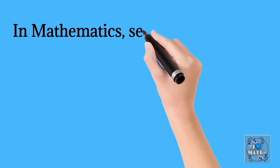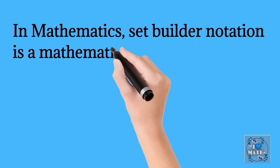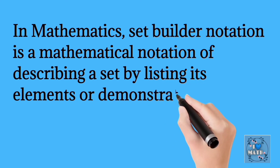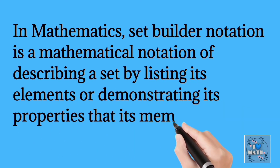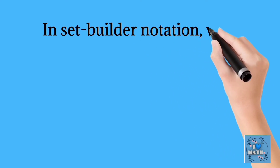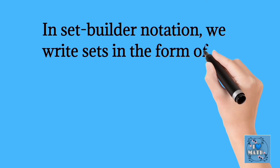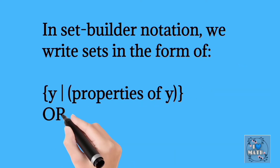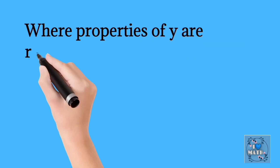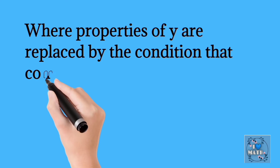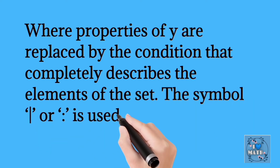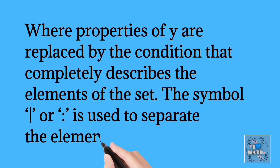In mathematics, set builder notation is a mathematical notation of describing a set by listing its elements or demonstrating its properties that its members must satisfy. In set builder notation we write sets in the form of y | properties of y, or y : properties of y, where properties of y are replaced by the condition that completely describes the elements of the set. The symbol | or : is used to separate the elements and properties.